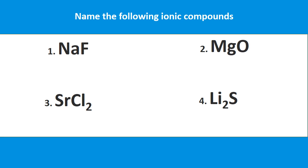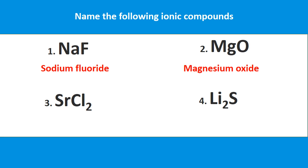Going through the same steps — name the metal (same name as the element), then name the anion using root plus '-ide'. First example: sodium and fluorine gives sodium fluoride. Second: magnesium and oxygen — we take the root 'ox-' from oxygen and add '-ide' — giving magnesium oxide. Third: strontium and chlorine gives strontium chloride. And example four is lithium sulfide.